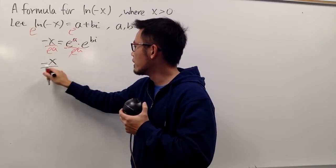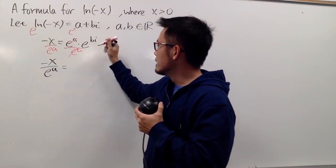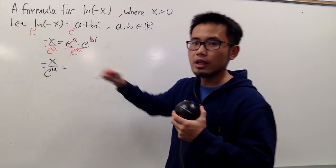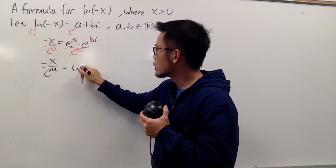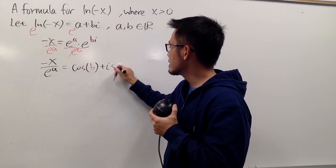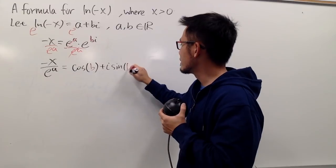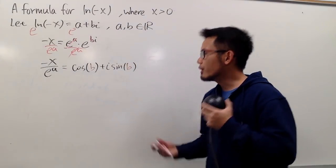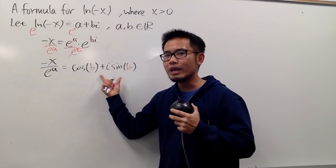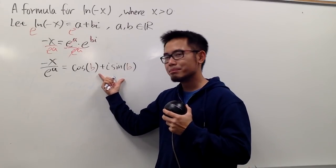So we have negative x over e to the a, and this right here, e to the bi, by the Euler's formula, we know this is going to be cosine of b plus i times sine of b. Okay, now, what is the deal? On the right-hand side, we have a complex number. But in fact, the left-hand side, look.